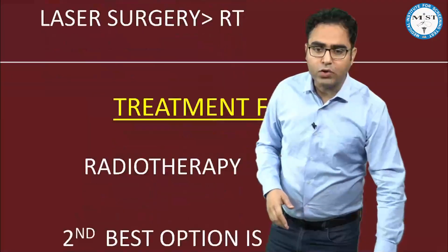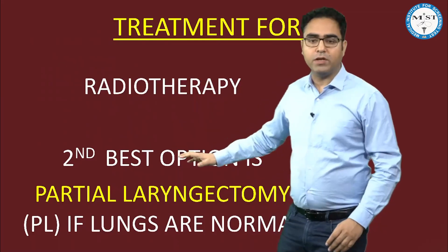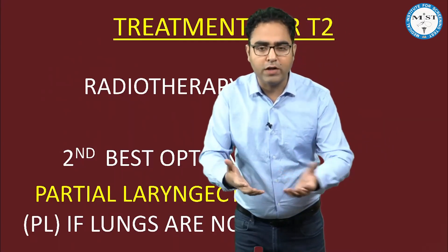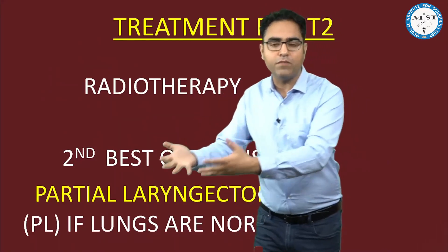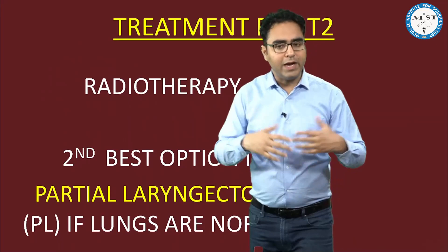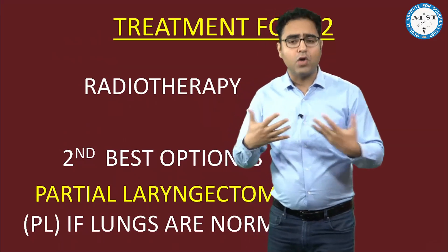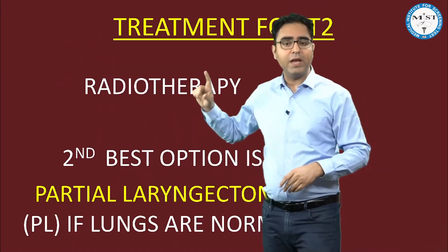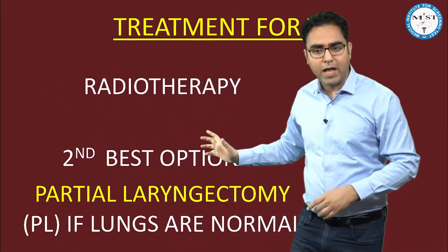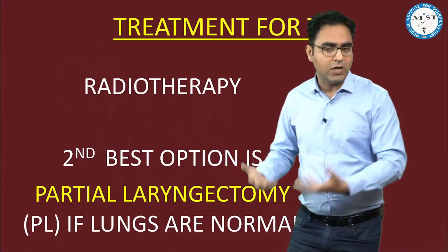For T2, again the treatment is radiotherapy. But if radiotherapy is not given as a choice, the second option is partial laryngectomy. T2 means tumor involving epiglottis and aryepiglottic fold, or aryepiglottic fold and false vocal cord. The treatment of choice for T2 is radiotherapy, but the second best option is partial laryngectomy. Partial laryngectomy is not done that commonly nowadays because the prerequisite is normal lung function, and these patients with carcinoma larynx are generally smokers with COPD, so they don't qualify.